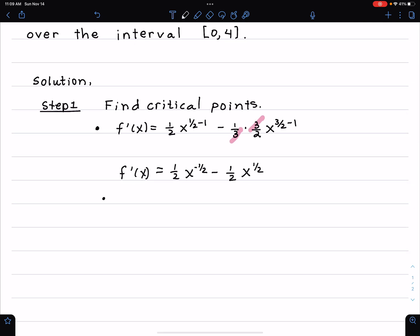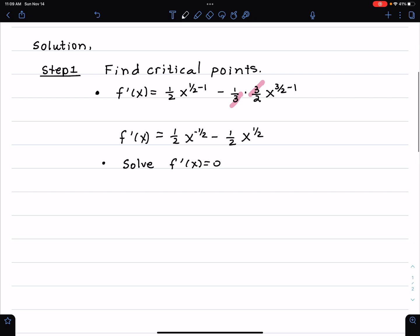Now, the next step is we're going to solve f'(x) equals 0. The way I'm going to do that is I am going to first write this piece, x to the negative 1/2, as 1 over square root of x. Note that x to the 1/2 means the same thing as square root of x. I'm going to write x to the 1/2 over 2. I'm going to get a common denominator and write this as a single fraction.